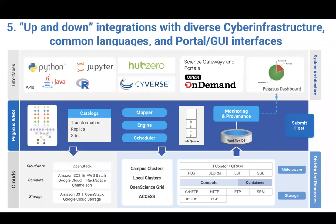Our fifth principle is up-and-down integration with cyberinfrastructure. We recognize that users have different capabilities and knowledge in terms of languages. Starting back in 2000, we started with Java APIs for constructing workflows. Then bioinformatics folks started using R, so we added R APIs. Nowadays, most people use Python and Jupyter notebooks. We also integrated with portals such as HubZero, CyberShake, and on-demand infrastructures in the US. These allow scientists to use capabilities without even knowing there's a workflow underneath. Below that, we integrate with different systems for job submission and data movement.